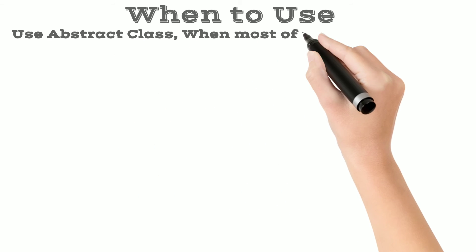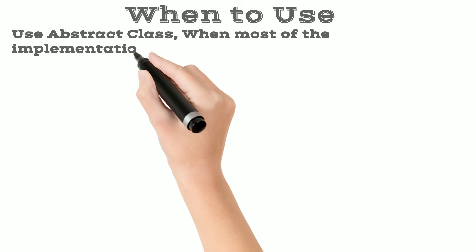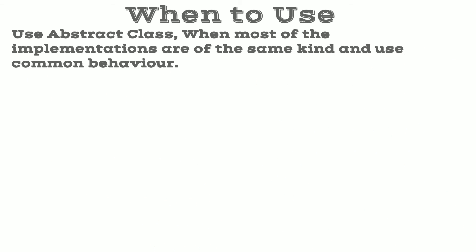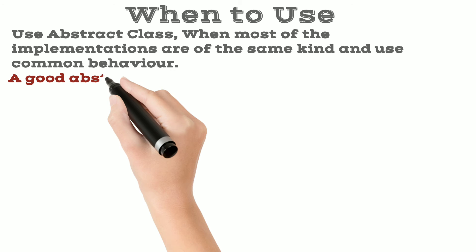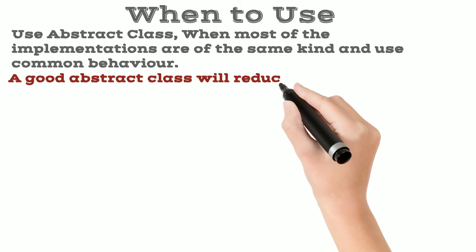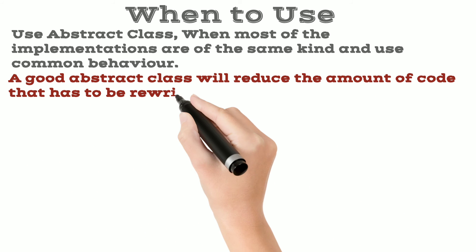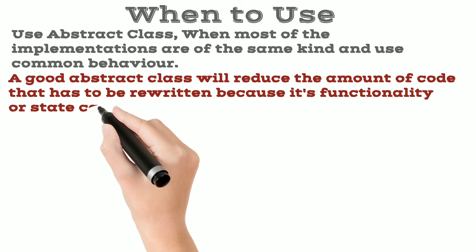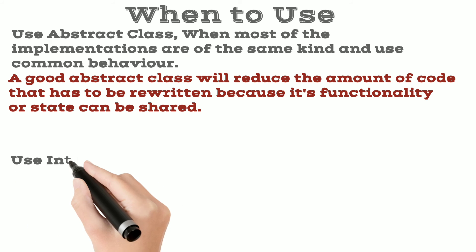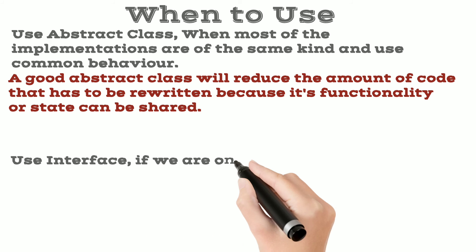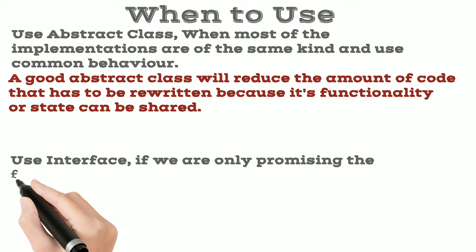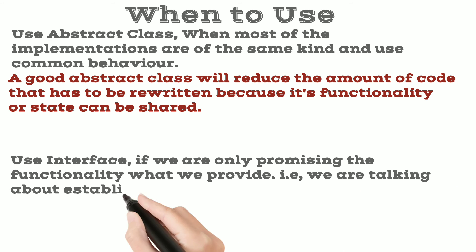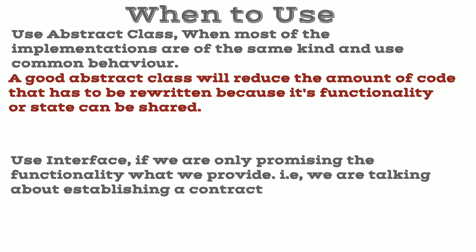Use an abstract class when most of the implementations are of the same kind and use common behavior. A good abstract class will reduce the amount of code that has to be rewritten, because its functionality can be shared. Use an interface if we are only promising the functionality we provide — that is, we are talking about establishing a contract.